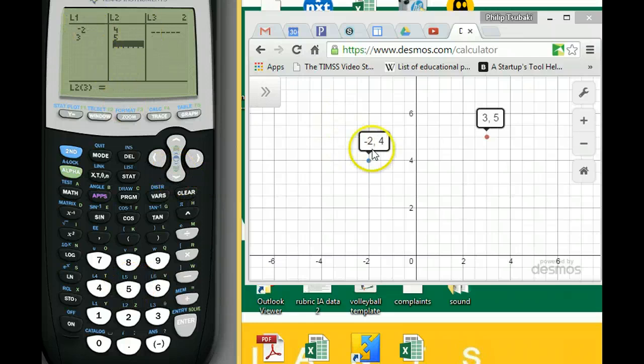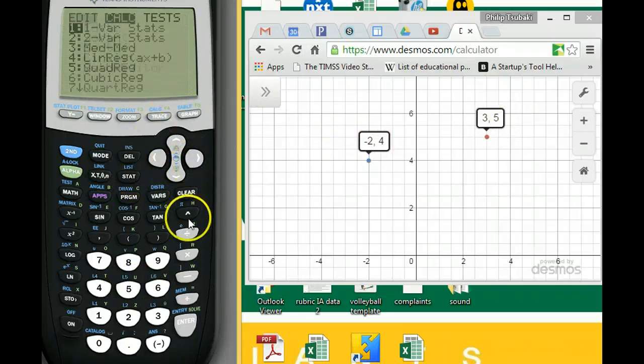So you can see we've input negative two comma four and three comma five here. And then we do a stat calc, and then we go down to lin reg.